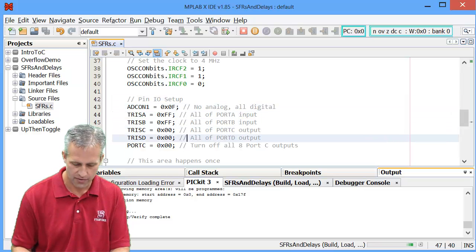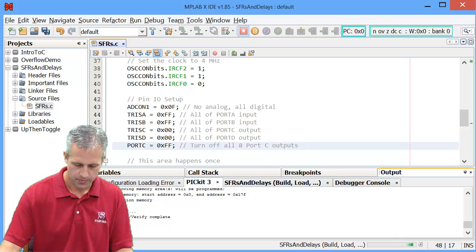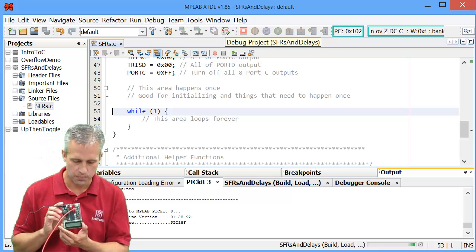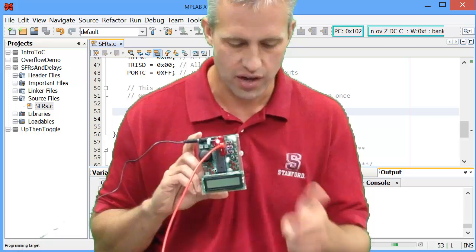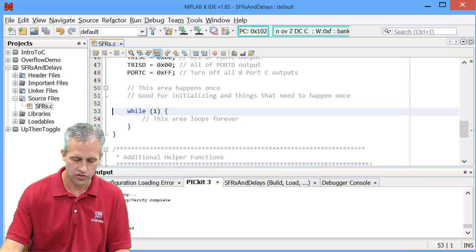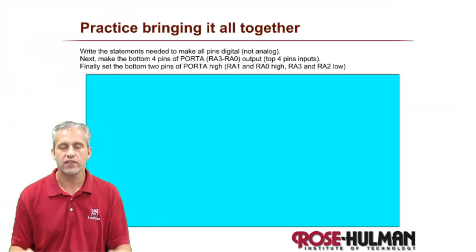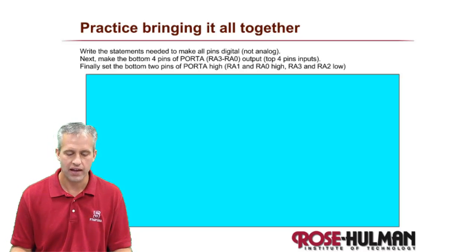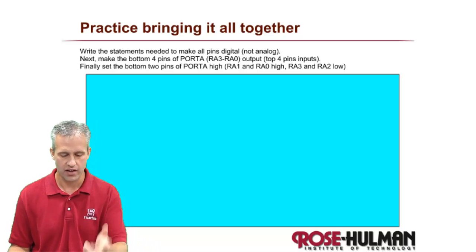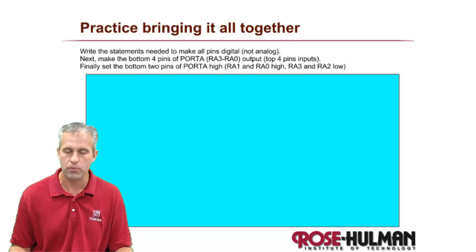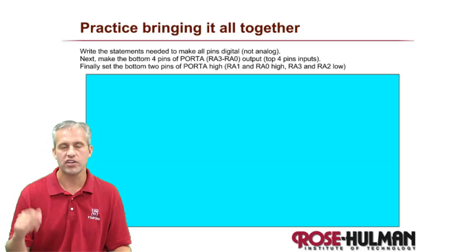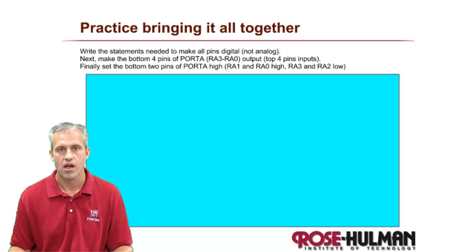If you switch the PORT register to 0xFF and run it, instead of all the LEDs being off as they are now, as soon as it's programmed and running they all come on. You can see the real power of special function registers pretty quickly. Let's give you one more example — see if you can read this and make it happen.